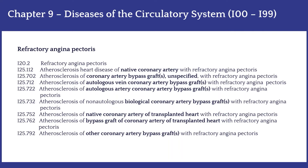Code I25.112 is for the native coronary artery, I25.702 for atherosclerosis of coronary artery bypass graft unspecified, I25.712 for atherosclerosis of autologous vein coronary artery bypass graft, and I25.722 for autologous artery coronary artery bypass graft. These codes identify refractory angina pectoris depending on the vessel, whether it was bypassed or a native coronary artery.